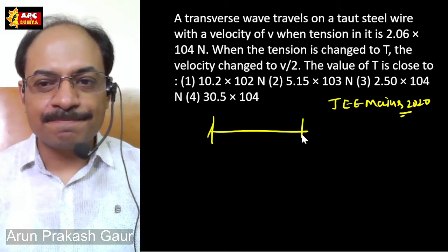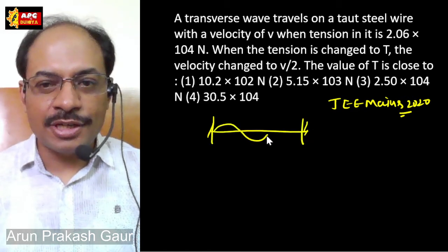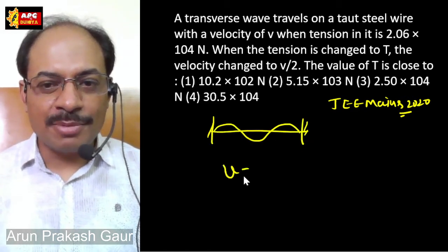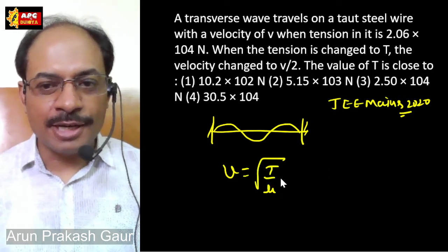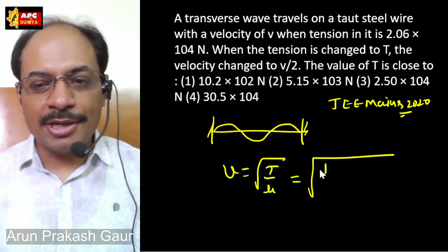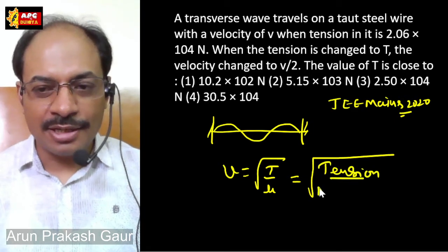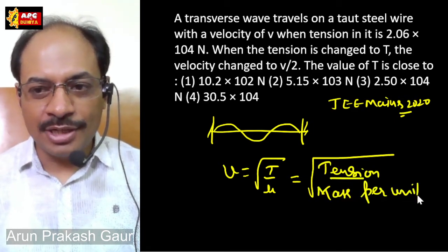If I take a string, if I take a wave of the velocity, then a string of the velocity is the root T upon μ. Where T is the tension, the string is the tension. The μ is mass per unit length.